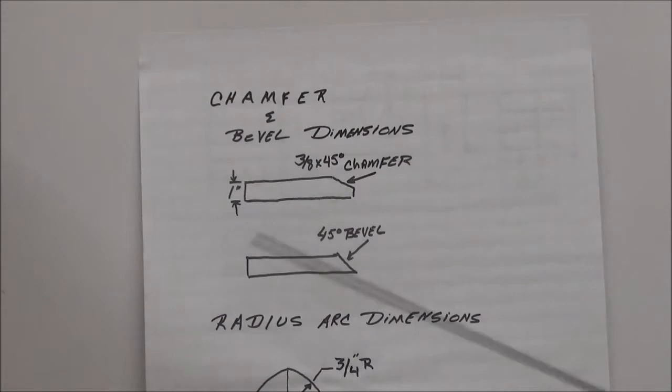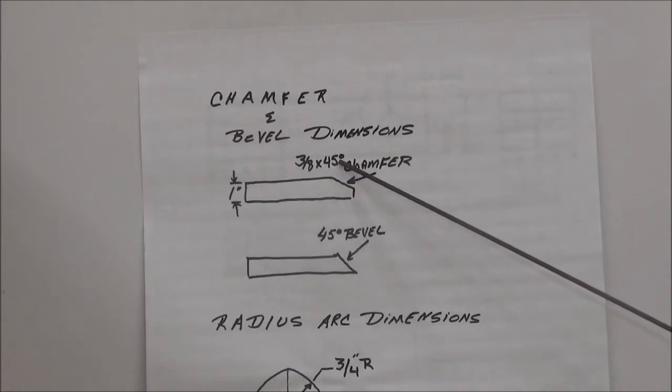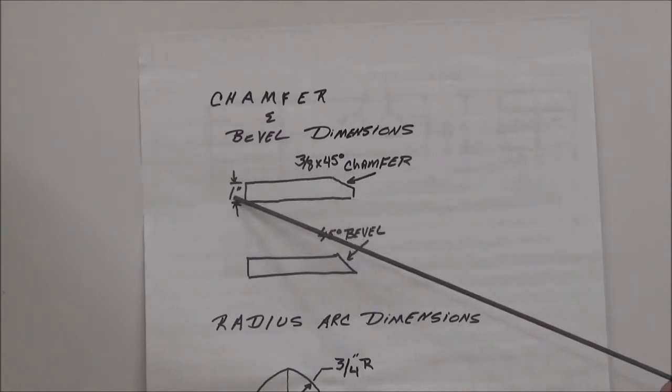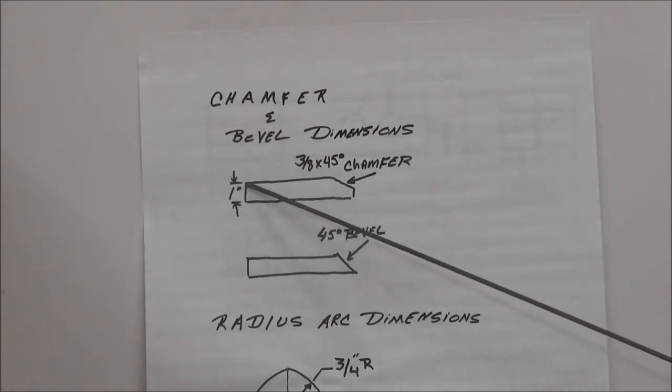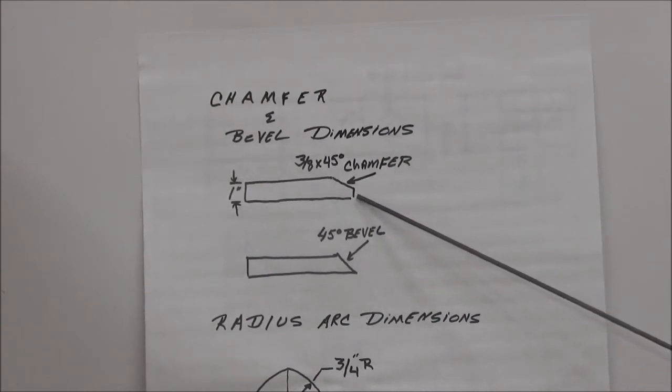This is known as a chamfer. Notice that it says 3/8 by 45. Now the material is one inch thick so that would be 3/8 of an inch over and 3/8 of an inch down cutting the chamfer. Notice when we cut a chamfer that we will be leaving a flat spot. This in the pipe fitting world we call this a landing and in the welding world we call this a landing.